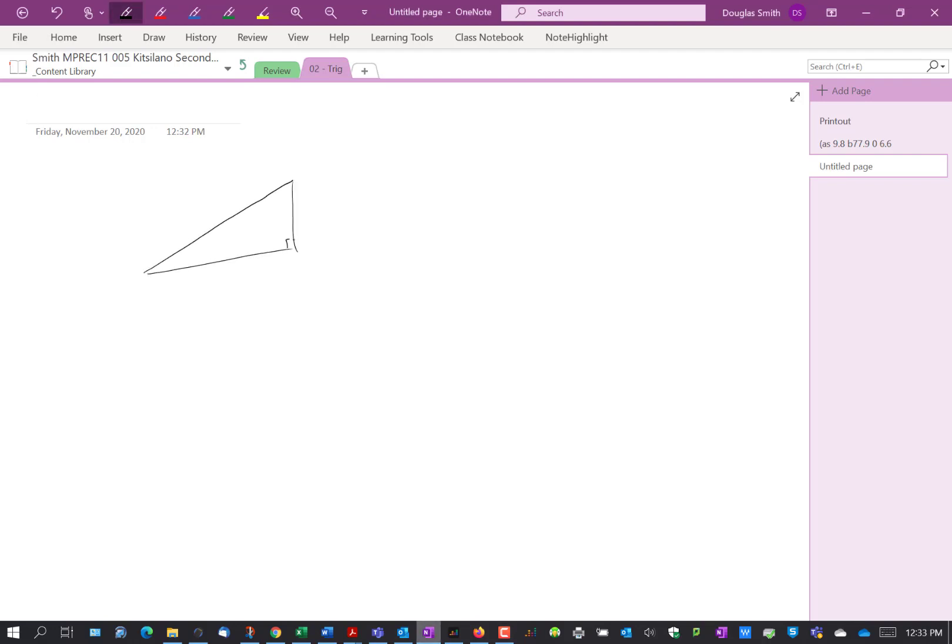So let's suppose we have a right angle triangle here, and this is 18, this is 5, and we want to know what this angle is there. So this is a ratio of opposite over adjacent, that's a tan ratio, so that's tan theta.